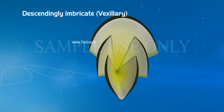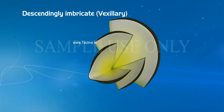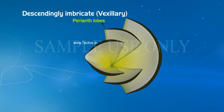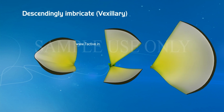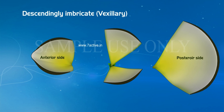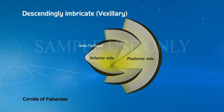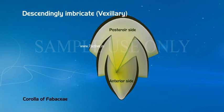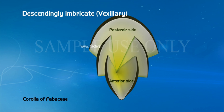Descendingly Imbricate Estivation: Each perianth lobe covers the perianth lobe present anterior to it. The overlapping of perianth lobes appears in posterior and anterior direction. Example: Corolla of Fabaceae, called Papilionaceous Corolla.